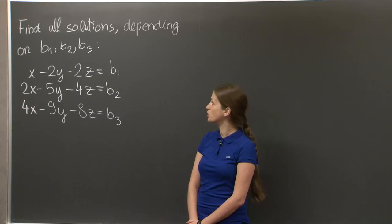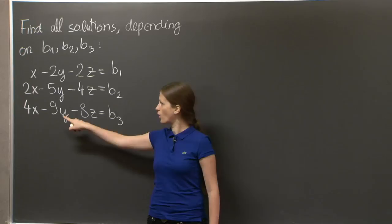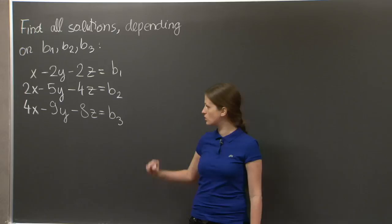Hi, welcome. Today's problem is about finding solutions of this non-homogeneous linear system: x minus 2y minus 2z equals b1, 2x minus 5y minus 4z equals b2, and 4x minus 9y minus 8z equals b3.